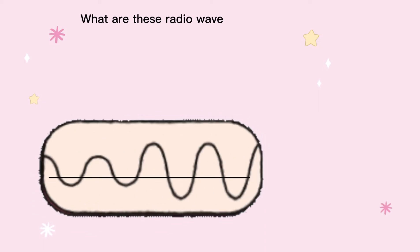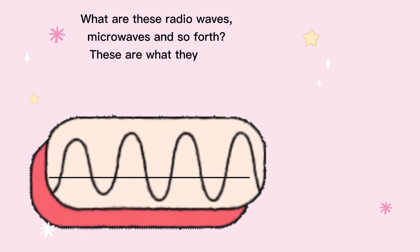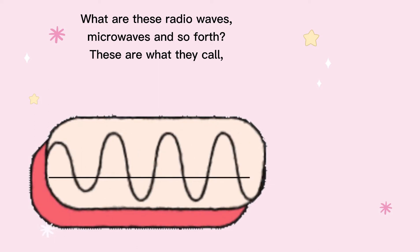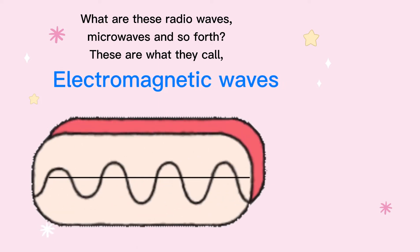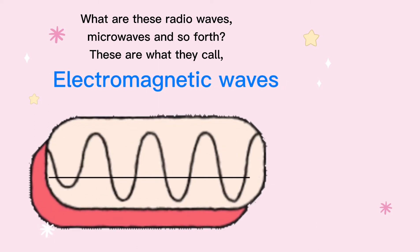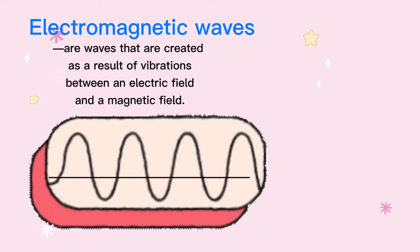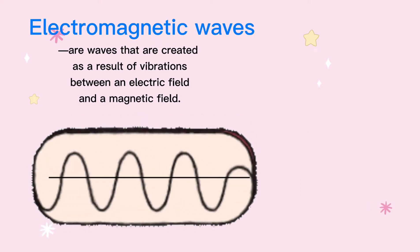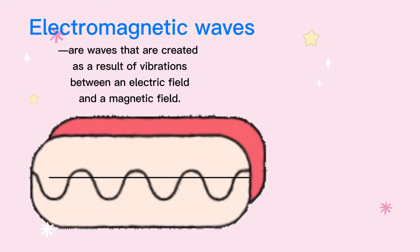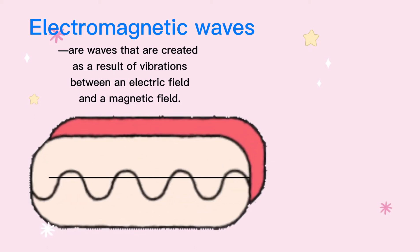What are these radio waves, microwaves, and so forth? These are what they call electromagnetic waves. EM waves are waves that are created as a result of vibrations between an electric field and a magnetic field.